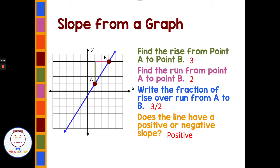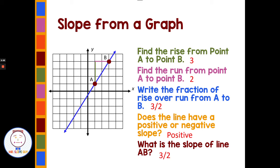We have a positive number, and we don't necessarily need to write a plus sign in front of it since positive numbers don't always require that. So the slope of our blue line AB is three over two.